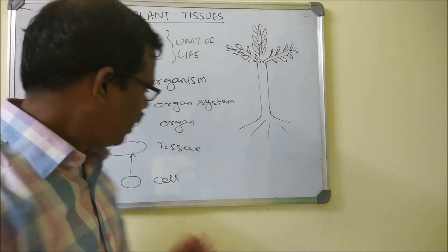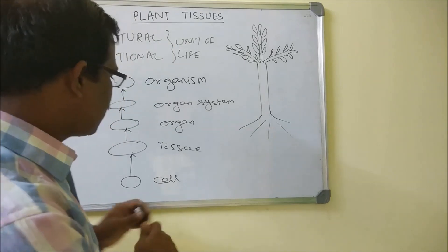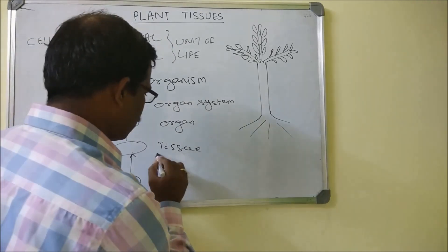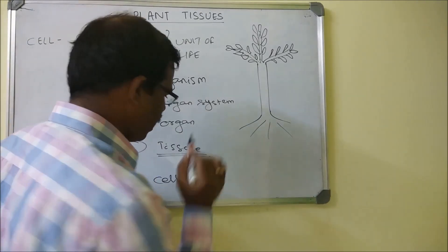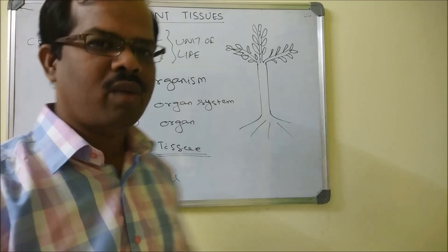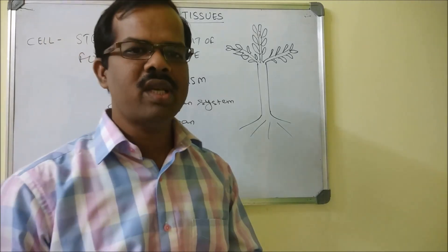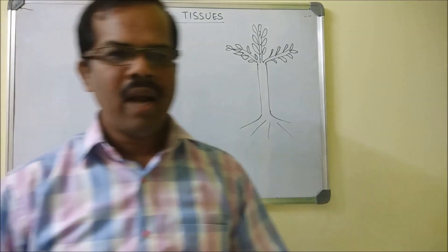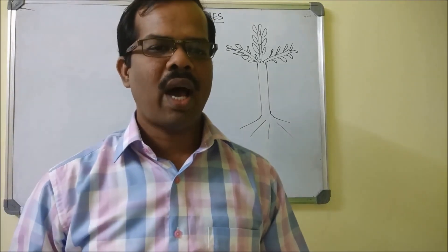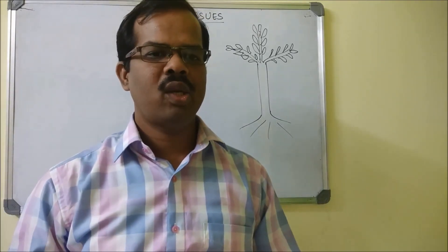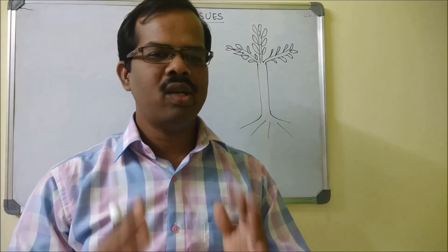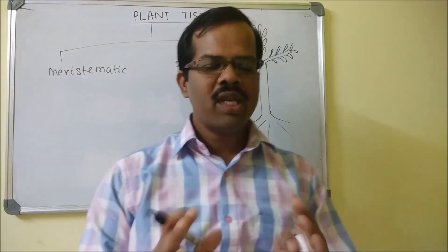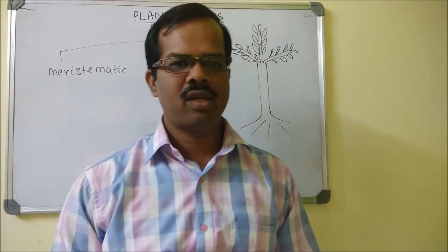Today we will be discussing about tissues, specifically plant tissues. Plant tissues are divided into two categories: one is meristematic tissues and the other is permanent tissues.